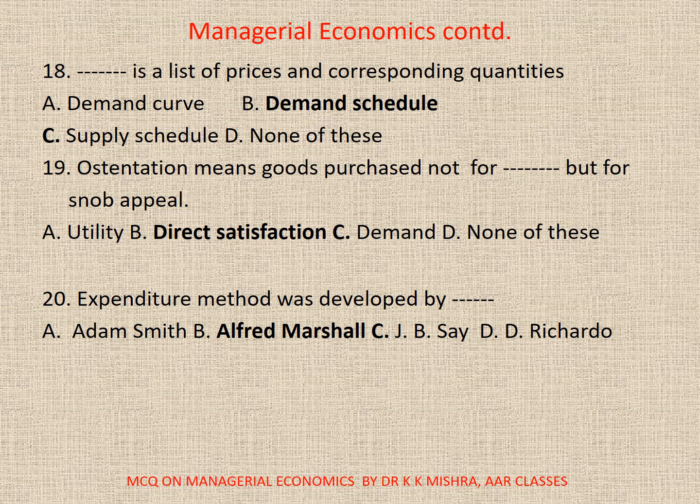19. Veblen goods means goods purchased not for direct satisfaction but for snob appeal: A. Utility, B. Direct satisfaction, C. Demand, D. None. Correct option is B. Direct satisfaction.